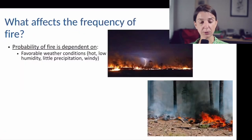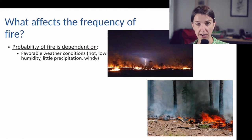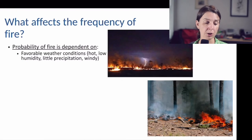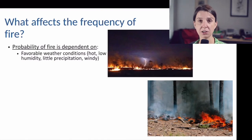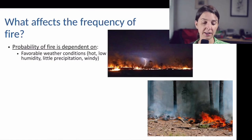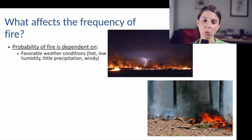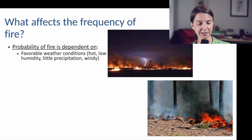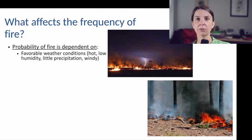The probability of fire in any one place depends on three main things. First, it depends on favorable weather conditions — climate conditions conducive to starting and spreading a fire. This involves hot temperatures, low humidity, and little precipitation, since wet conditions make it harder to start a fire.